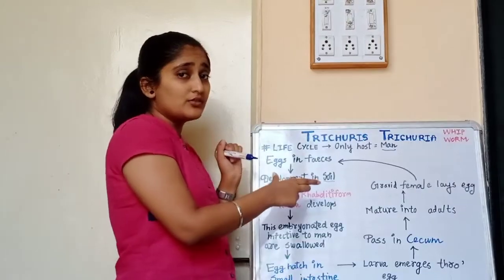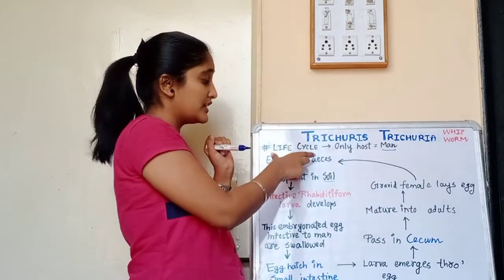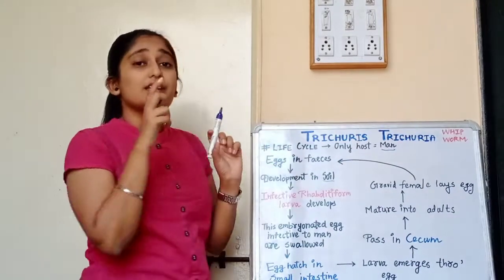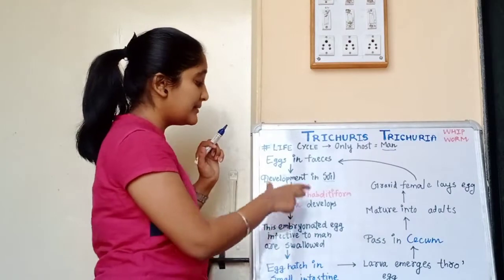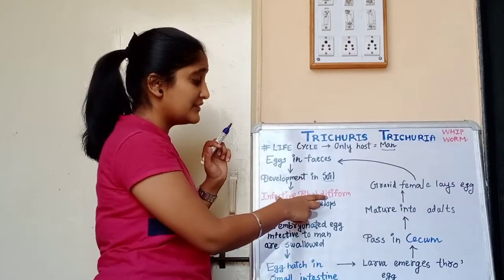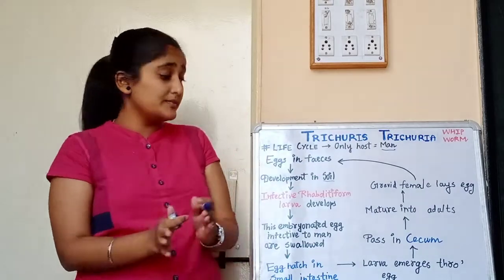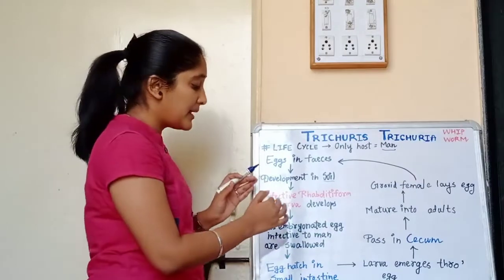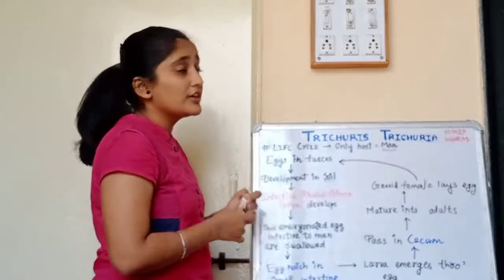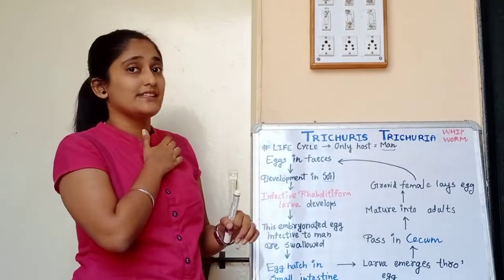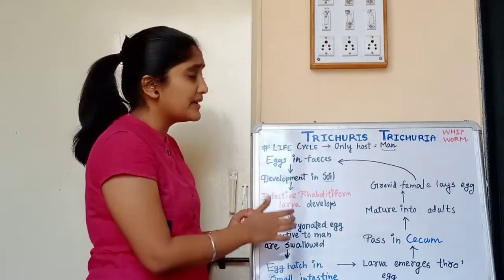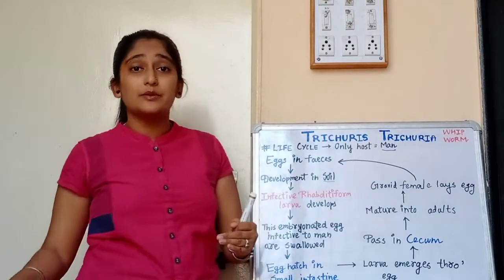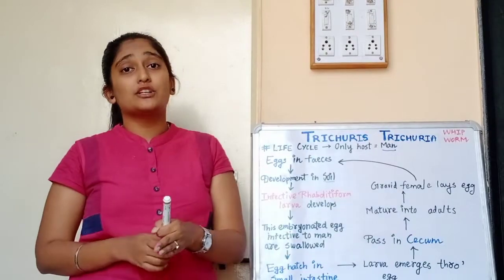In summary: the egg is released in feces; in the soil, it develops into the infective rhabdiform larva; the infective larva causes infection to human beings when the egg is swallowed through contaminated food and water. It comes into the small intestine, gets hatched, the larva is released, then travels to the cecum where it becomes a mature adult.